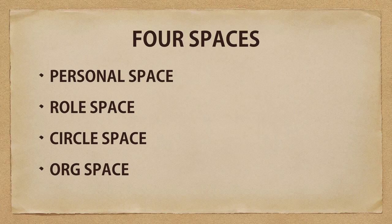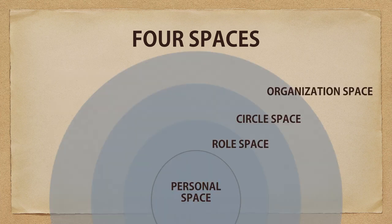The four spaces are your personal space, role space, circle space, and org space or organization space. Personal space is in the middle, then role space is outside of that, circle space is outside of that, and organization space is outside of that. The reason we have these four sections is because what you're doing at a particular time is usually influenced by a particular space, and each space has a protection from the one outside of it.